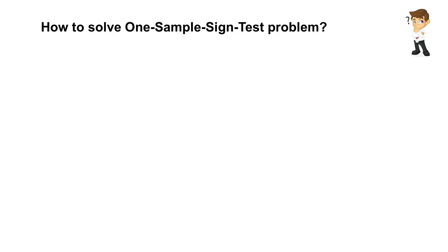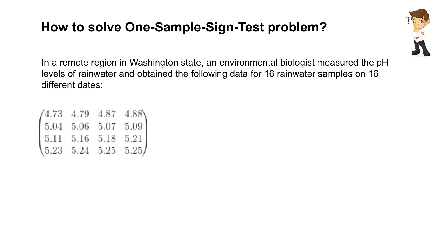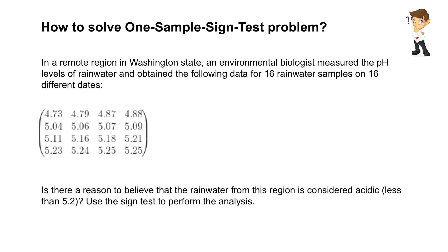Suppose we are given with this problem. In a remote region in Washington state, an environmental biologist measured the pH levels of rainwater and obtained the following data for 16 rainwater samples on 16 different dates. Is there a reason to believe that the rainwater from this region is considered acidic, which is less than 5.2? Use the sign test to perform the analysis.